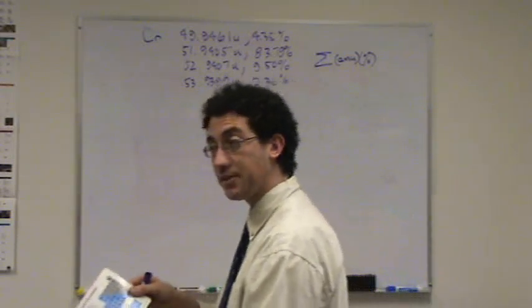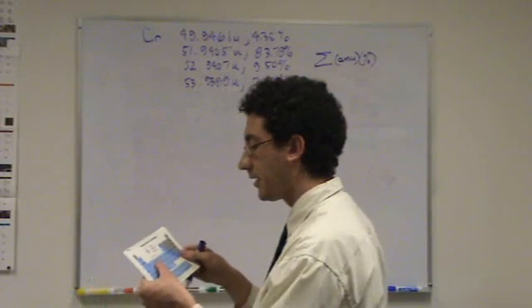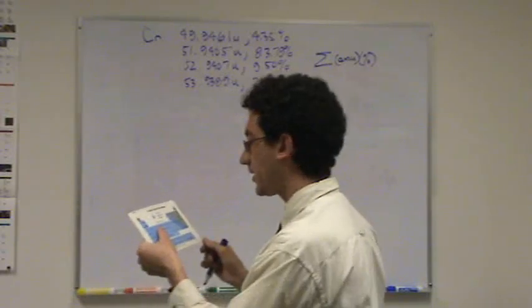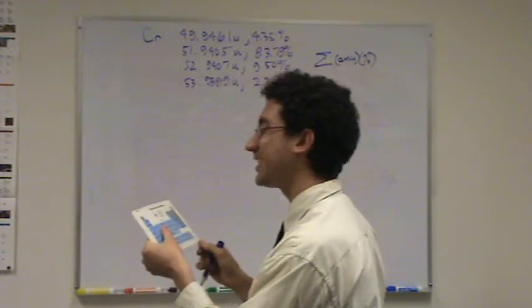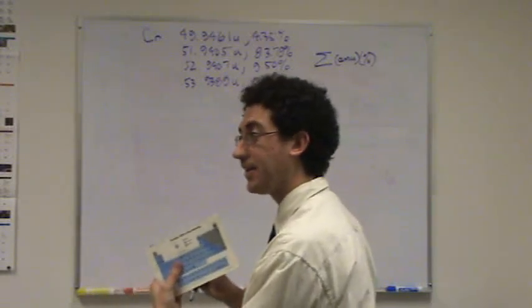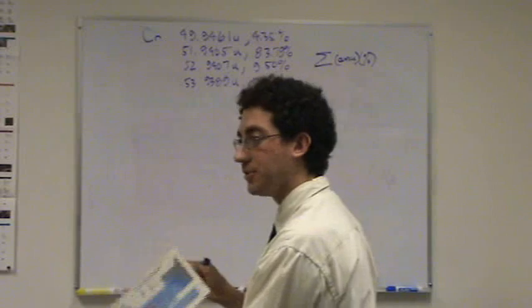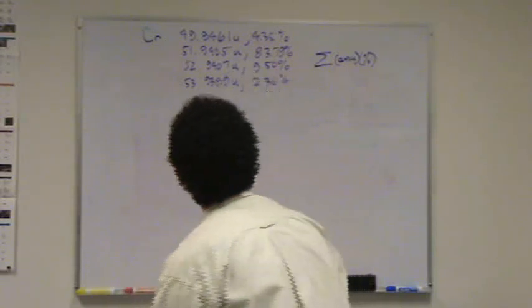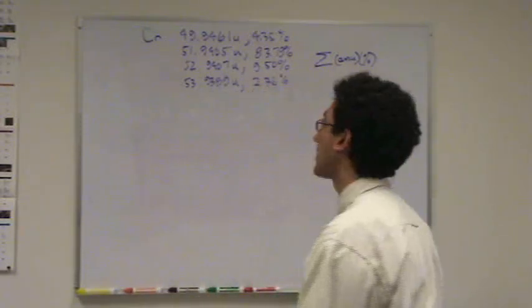And you can double check your answer, so this would be good for you. If you look at chromium in the periodic table, it says 51.996. You better get a number that's really close to that. If it's not, you know you're wrong. Okay, so that's a great check with the periodic table.